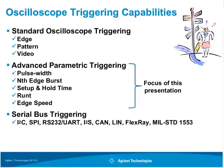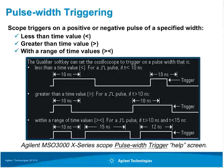Although edge triggering is the most commonly used type, many of today's oscilloscopes have advanced triggering to synchronize acquisitions. With advanced parametric triggering, we have pulse-width triggering, nth-edge burst triggering, setup and hold, RUNT, and edge speed — all of which will be covered in this presentation. This oscilloscope also comes with serial bus triggering, with a variety of serial protocols offering triggering capabilities specific to each protocol.